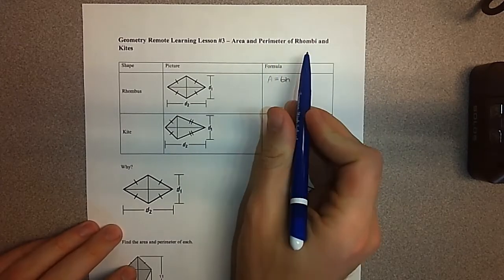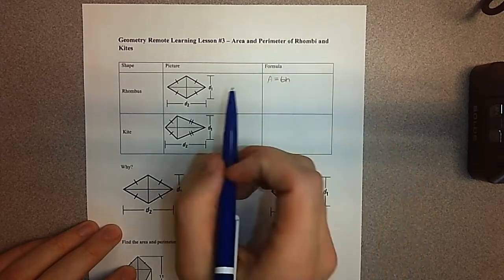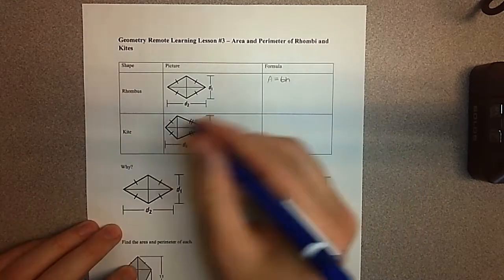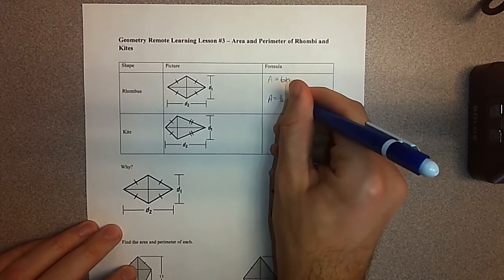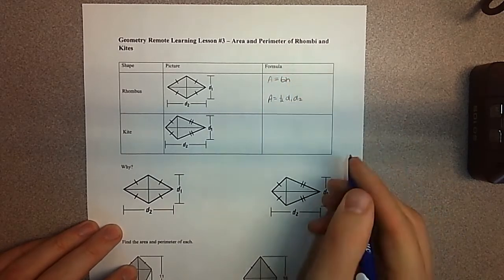The reason why I group rhombus with a kite is that there is a second area formula, which is area equals one-half times diagonal one times diagonal two.